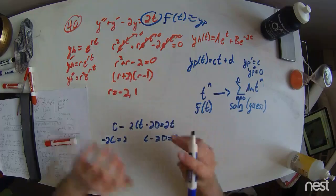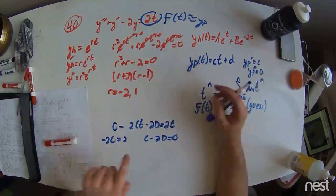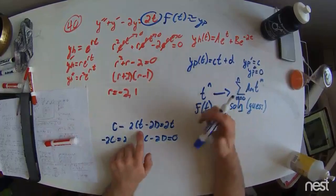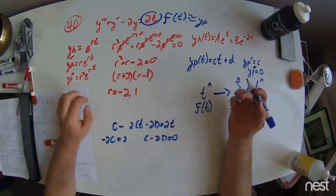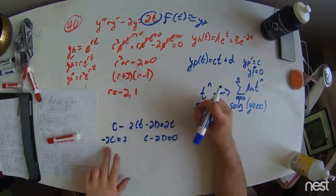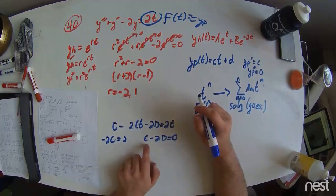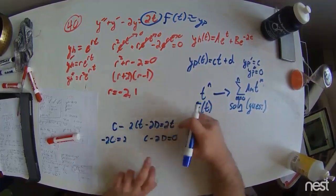This is simply gathering the constants on each side into their respective terms, multiplying their respective terms t and some constants in this problem, and saying the constants on each side equal to each other. For t, it is minus 2c equal to 2, and for the constants, it is c minus 2d equals 0.